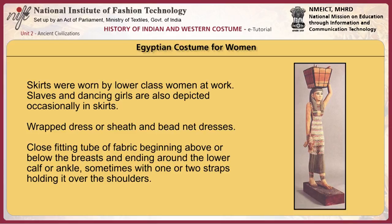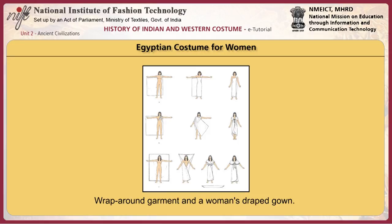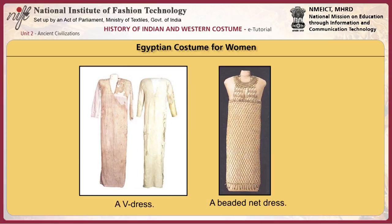Clothes fitting like a tube or fabric beginning above or below the breast and ending around the lower calf or ankle, sometimes with one or two straps holding it over the shoulders. Pleated and draped wrapped long dresses are the most complex garments worn by Egyptian women. Tunics and v-neck dresses, shawls and cloaks of similar styles were worn. Sashes were used to hold clothing in place.